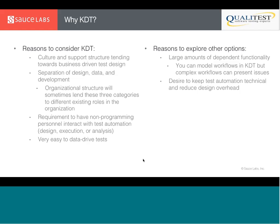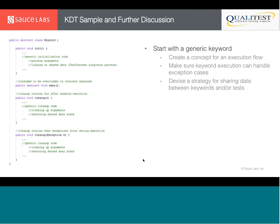Let's go through some code samples to give you a platform to build from if you want to implement a KDT framework. First, start with defining what a keyword is and what its execution flow looks like. A good approach is to create a generic keyword with a concept for initialization, execution, and cleanup — just like we handle objects in object-oriented languages. It's important there also be a way to clean up after a keyword in the event that an exception occurs while initializing or executing it, including two signatures for the cleanup method.